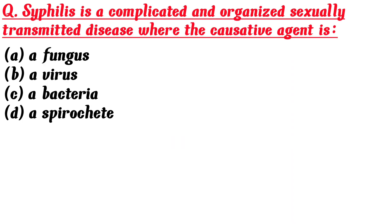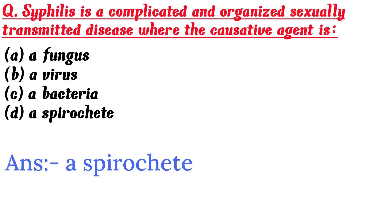Syphilis is a complicated and organized sexually transmitted disease where the causative agent is: A. A fungus, B. A virus, C. A bacteria, D. A spirochete. Answer is D. A spirochete.